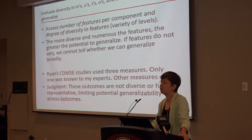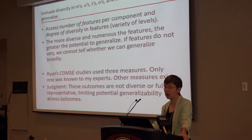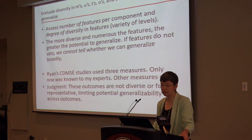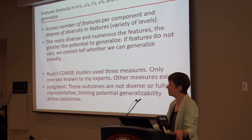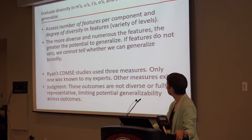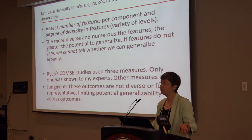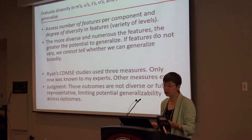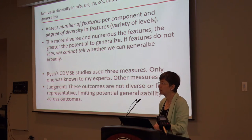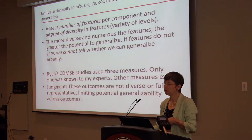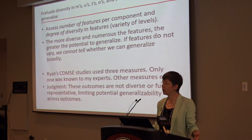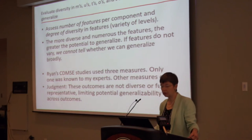How do we evaluate this diversity? It's pretty simplistic right now, but I look at the number of features per U, T, O, and S, and how diverse they are. The more diverse and numerous the features, the greater potential we have to be able to generalize. If every study collected uses the same outcome measure, we don't know whether the effect is the same for other measures.